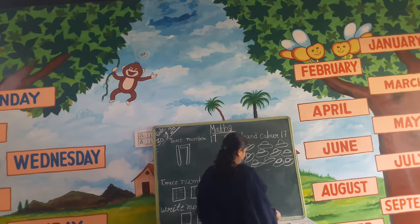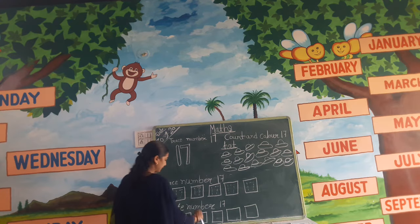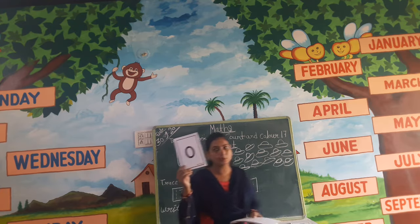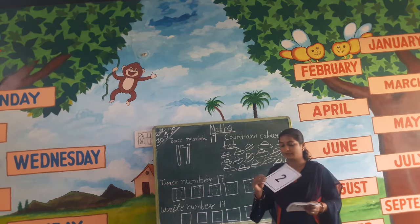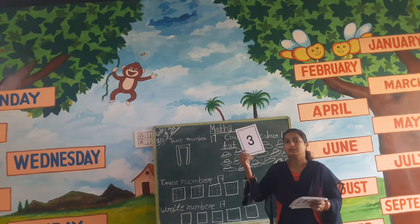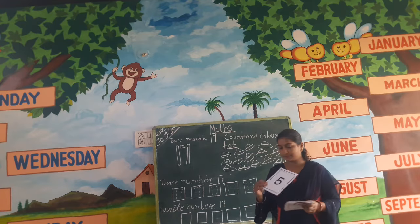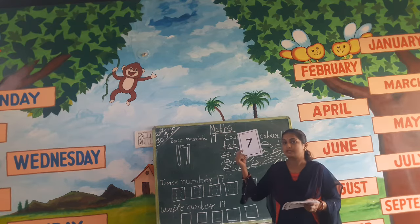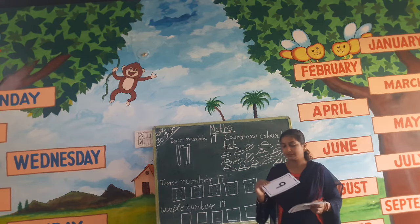Before counting, first we are counting. Zero, one, two, three, four, five, six, seven, eight, nine, ten.